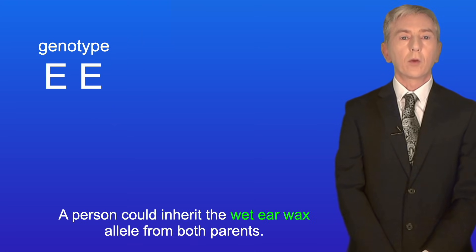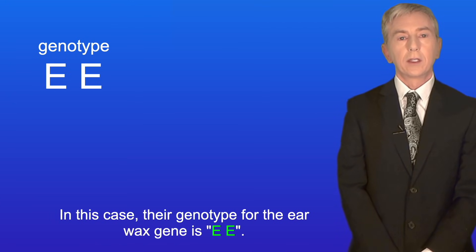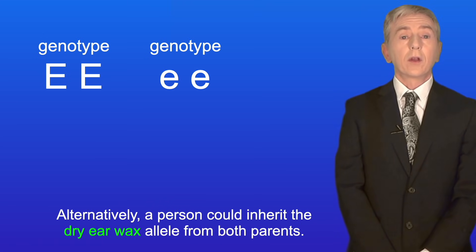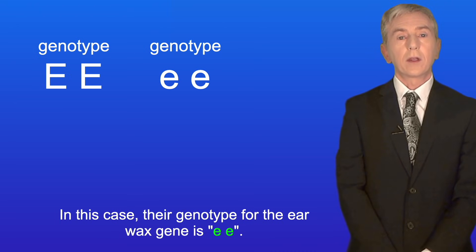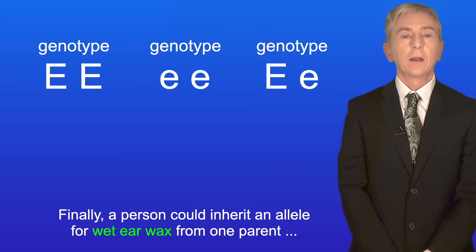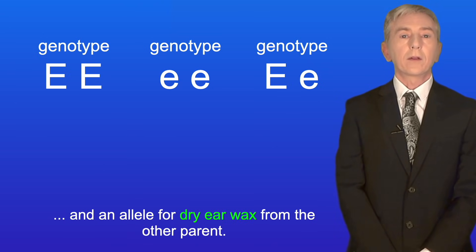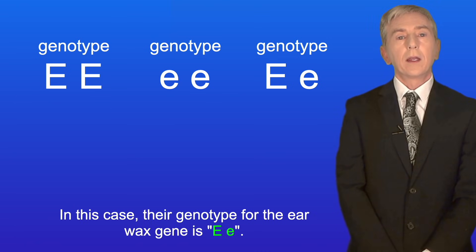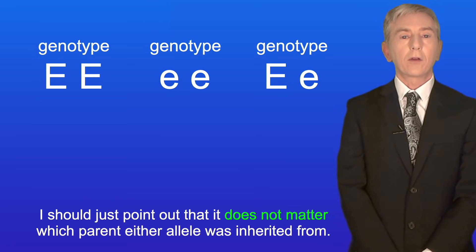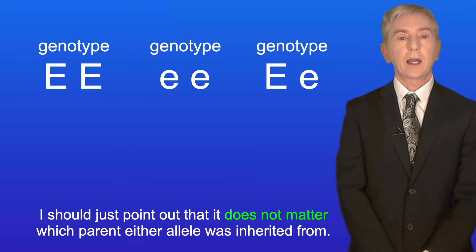A person could inherit the wet earwax allele from both parents — in this case their genotype is EE (capital E, capital E). Alternatively, a person could inherit the dry earwax allele from both parents — in this case their genotype is ee (lowercase e, lowercase e). Finally, a person could inherit an allele for wet earwax from one parent and an allele for dry earwax from the other — in this case their genotype is Ee (capital E, lowercase e). It does not matter which parent either allele was inherited from.